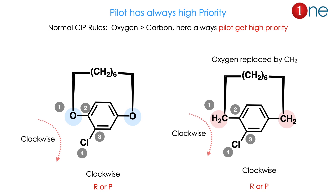If oxygen is replaced by CH2, there is no change in configuration. This is because the priority rule here is not based on atomic number. The pilot atom always gets highest priority — not oxygen. So pilot always gets priority 1, and the numbering 1, 2, 3, 4 gives the same configuration regardless of whether it is oxygen or CH2.